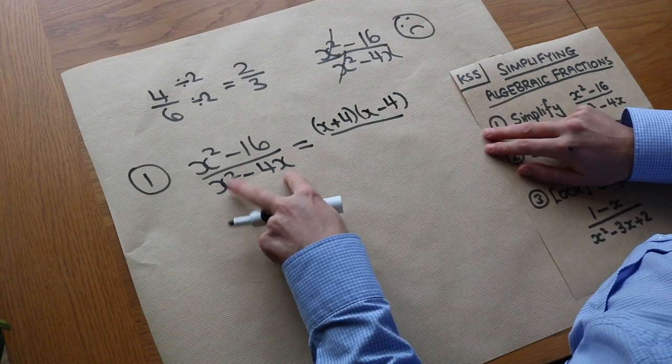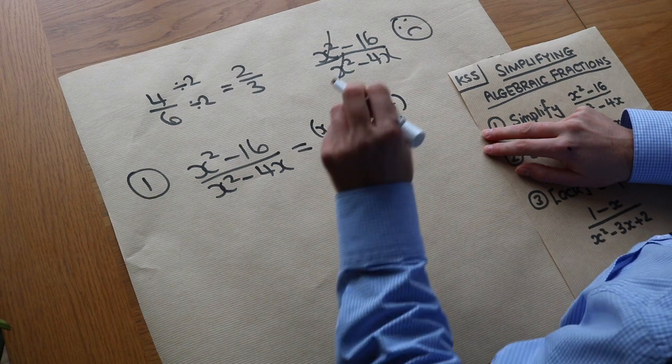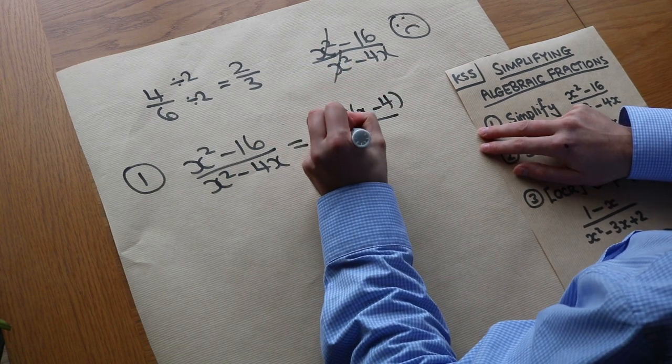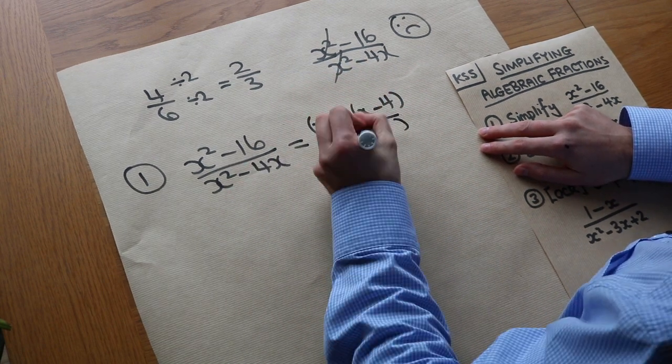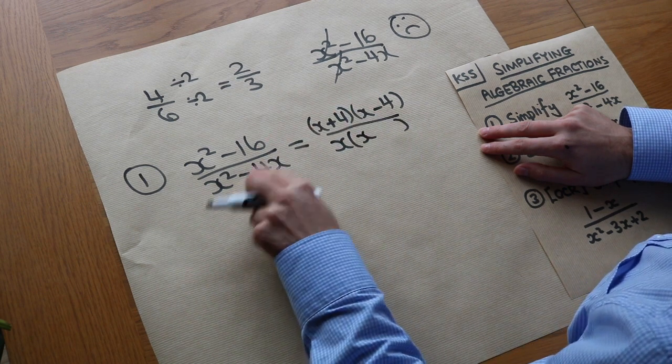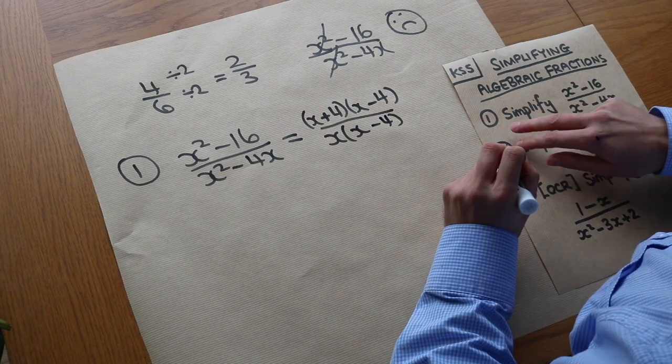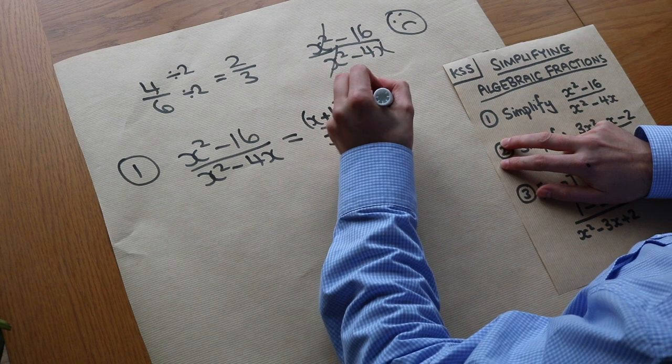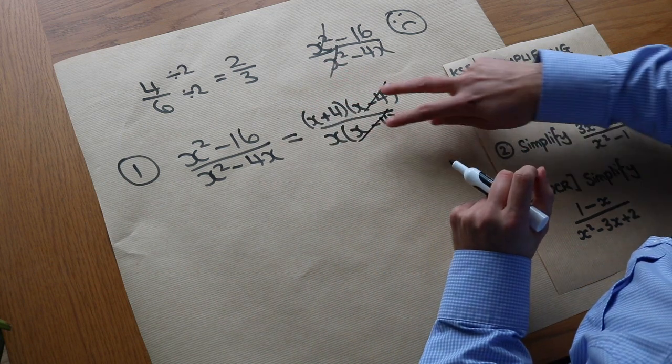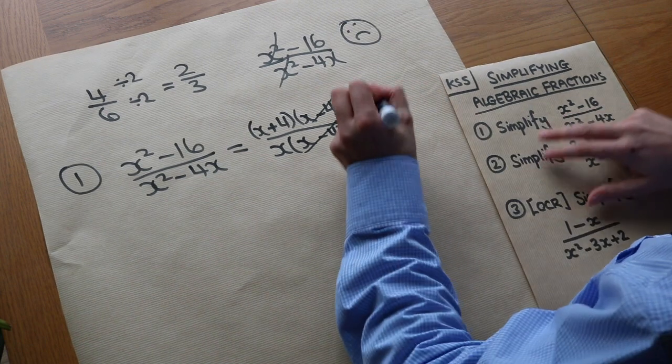And the bottom we just have a common factor of x. Always look for a common factor first. So x times what is x squared? X. And x times minus 4 is minus 4x. At this point we are allowed to cross out these x minus 4s because we are actually dividing by x minus 4 when we cross them out.